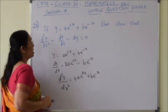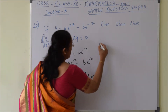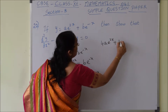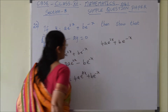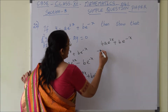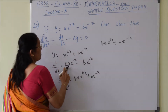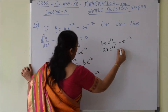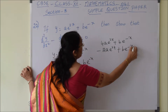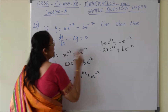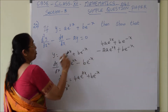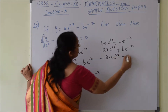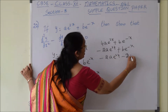Now substitute these values into the equation: d²y/dx² is 4ae^(2x) plus be^(-x), minus dy/dx which is minus of 2ae^(2x) minus be^(-x), giving minus 2ae^(2x) plus be^(-x), then minus 2y which is minus 2 times ae^(2x) plus be^(-x), giving minus 2ae^(2x) minus 2be^(-x).